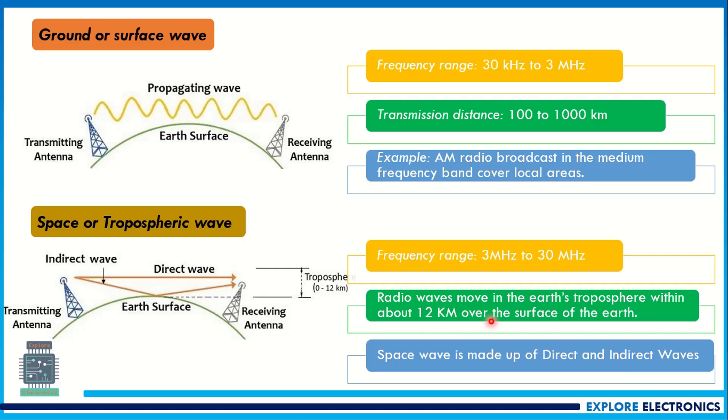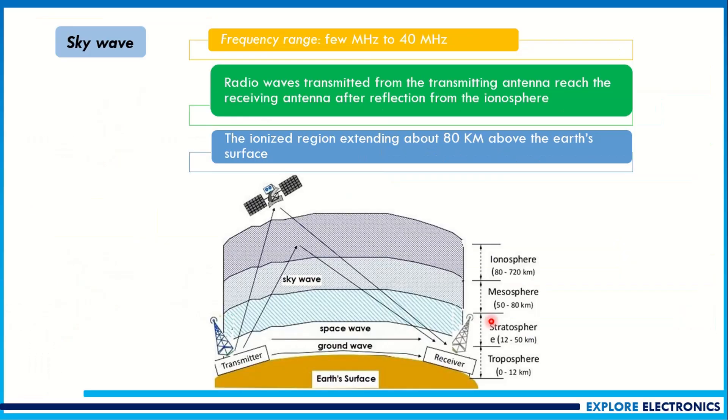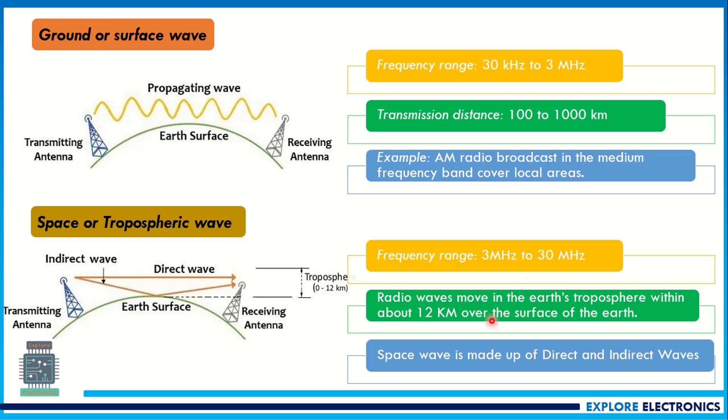And then different types. You can see ground waves, surface wave and space wave, and also sky wave. This can be explained briefly like this, giving those parameters with respect to those waves.